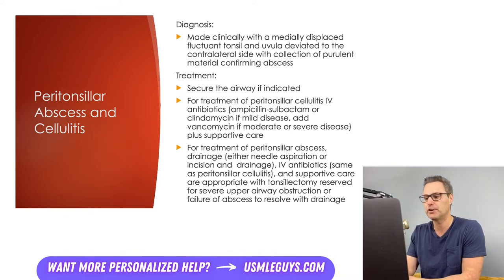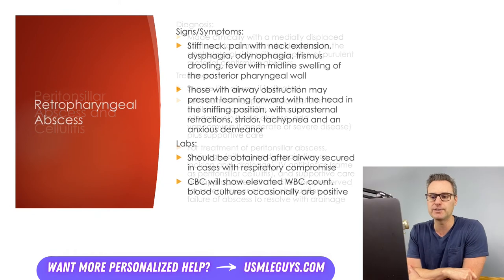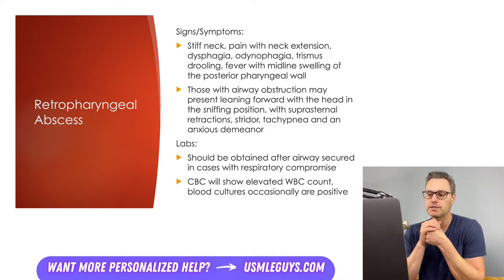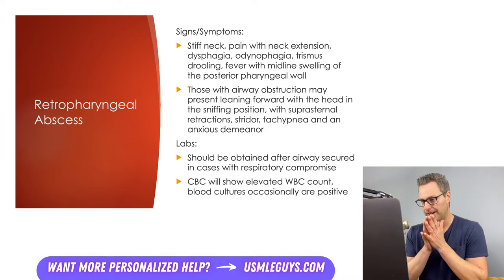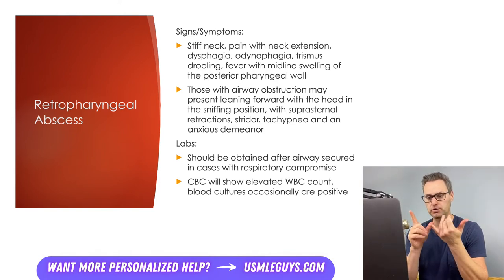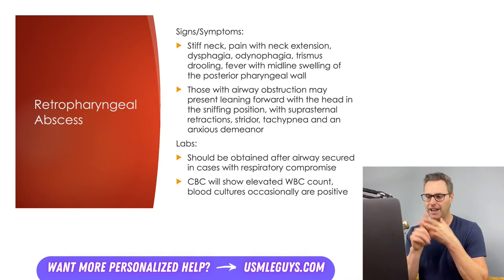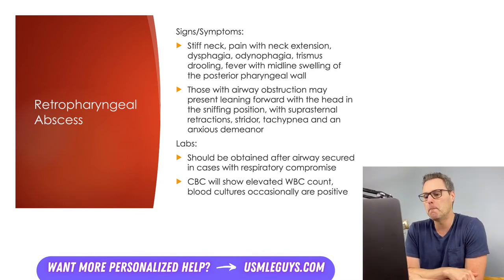Next up, we have the retropharyngeal abscess. In children, these occur most often between ages 2 and 4 years, and the abscess is usually polymicrobial — typically group A Strep, Staph aureus, and respiratory anaerobes. Patients typically present with stiff neck and neck pain with extension, dysphagia, odynophagia, drooling, trismus, and fever. On exam, you might note midline swelling of the posterior pharyngeal wall.